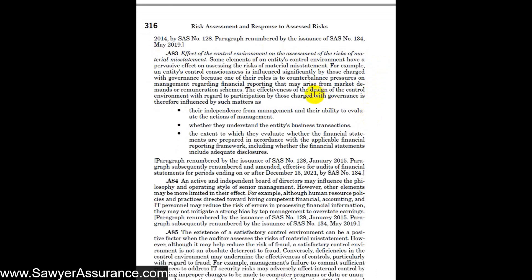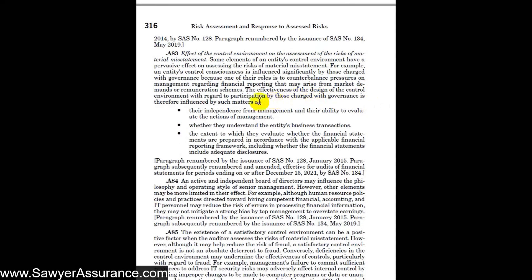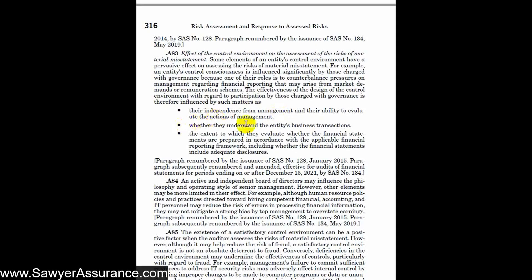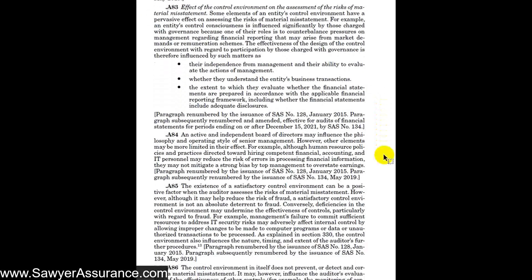One of the key issues discussed is the role of governance in the organization — whether governance is independent from management, making them more likely to evaluate the actions of management without bias. Also relevant is whether they understand the entity's business transactions and the extent to which they evaluate whether financial statements are prepared in accordance with the financial reporting framework. If governance is not particularly independent or knowledgeable about financial reporting standards, the financial statements might be materially misstated.